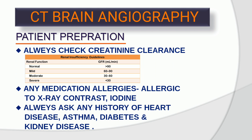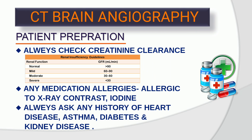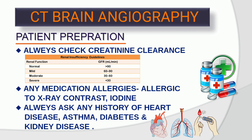Renal insufficiency guideline: renal function normal — GFR above 90; mild 60 to 90; moderate 30 to 60; severe below 30. Check any medication allergies, including allergy to X-ray contrast or iodine. Always ask about any history of heart disease, asthma, diabetes, and kidney disease.